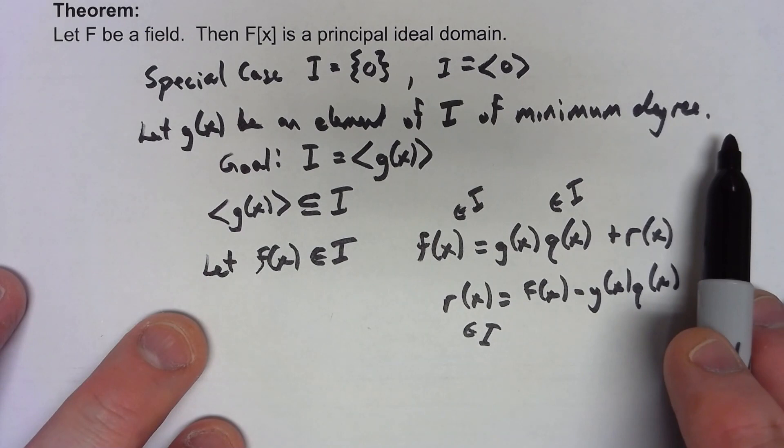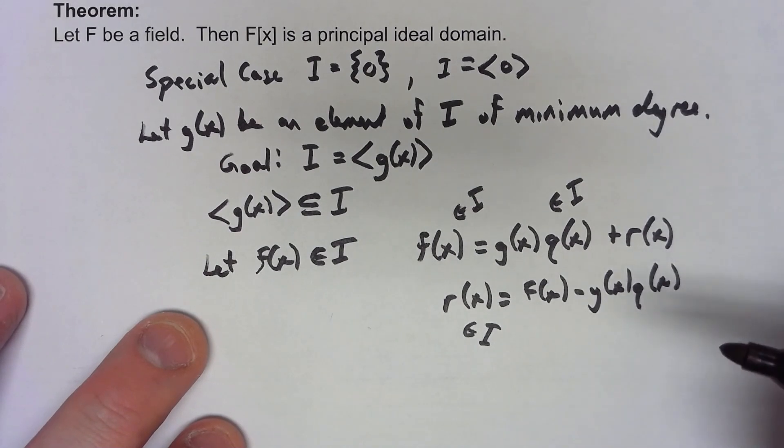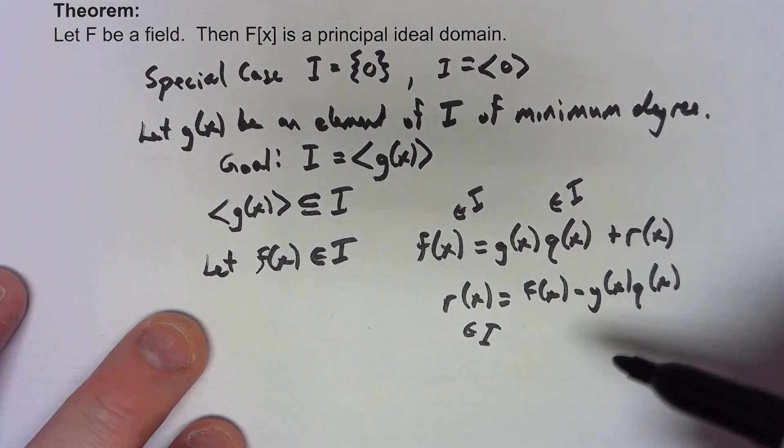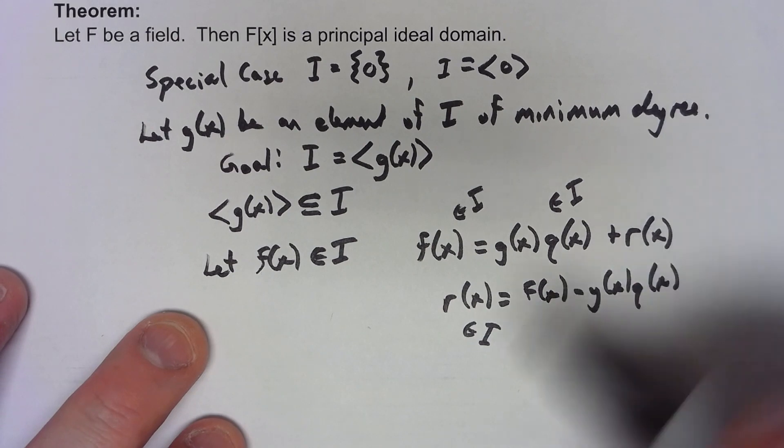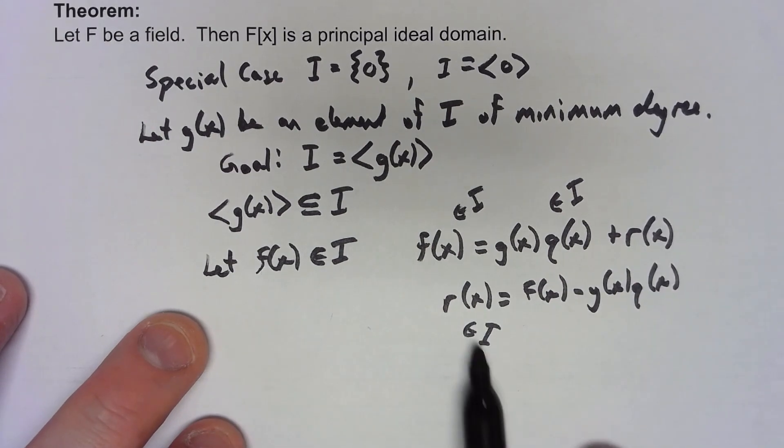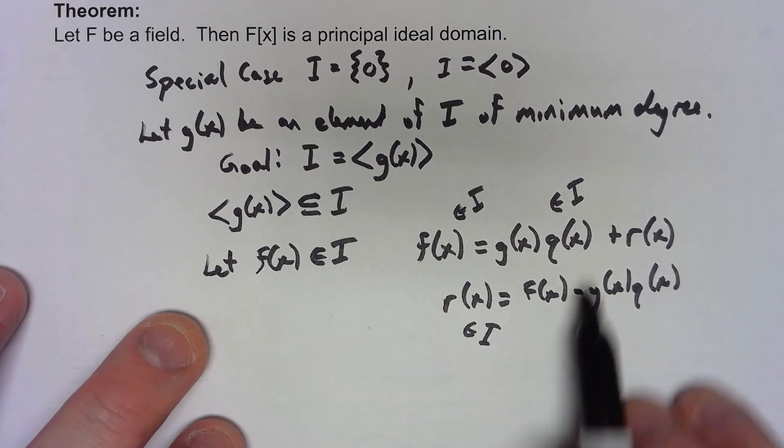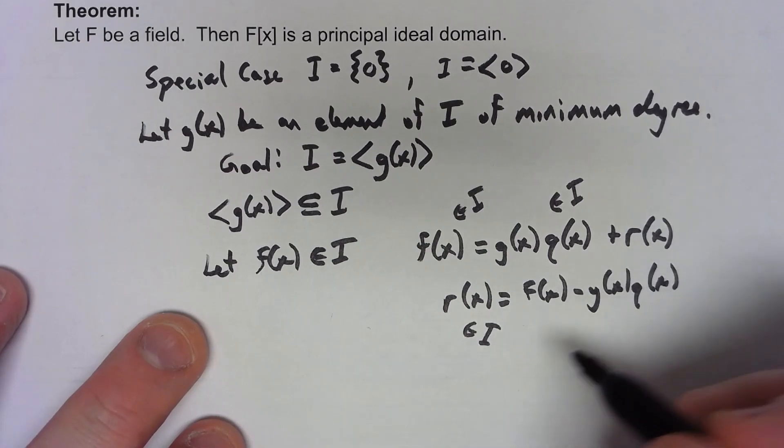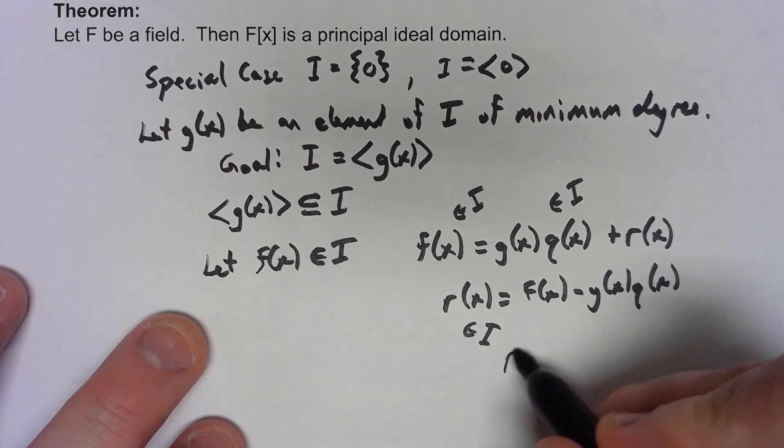We've got a contradiction. So it must be that the only way we can get around that contradiction is if r(x) equals 0.